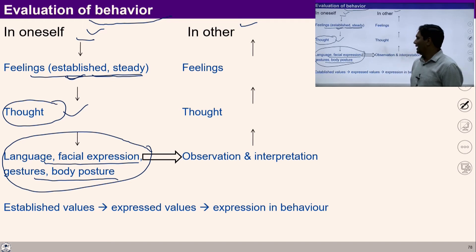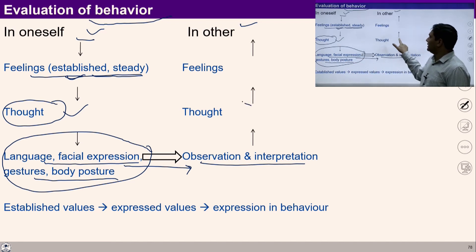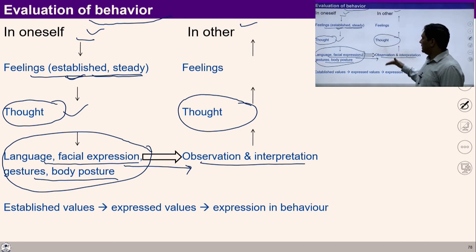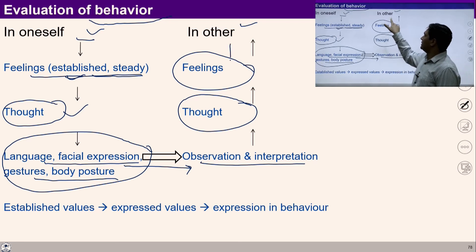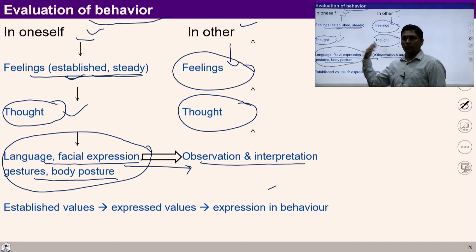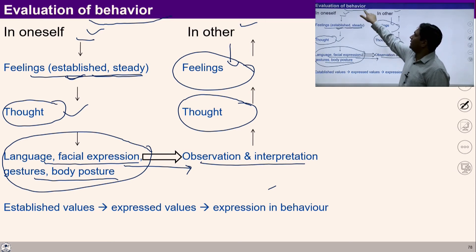What the other can see in me is my expression, my gestures, my body postures. Once the other observes my facial expression and language, he can think about my feelings and guess what they may be. If he recognizes these feelings, he has his own thoughts according to the feeling he has recognized, then he can express himself. From my side I will again read his expression, then think, then guess his feelings. In this way we communicate and evaluate each other's behavior.